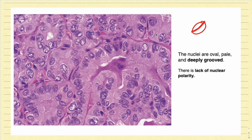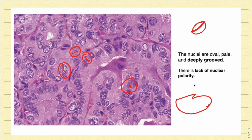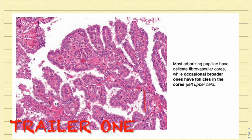The next important histological feature is the deep nuclear grooving. If you see, look at this nucleus — there is a grooving in between. Look at this particular nucleus — there is again a grooving like this. There are multiple nuclei here wherein you can see the classical nuclear grooving. This nuclear grooving is nothing but a folding of the nuclear membrane. When looked from the top, it appears as a deep nuclear grooving or cleft.